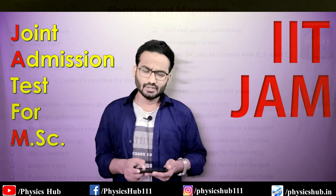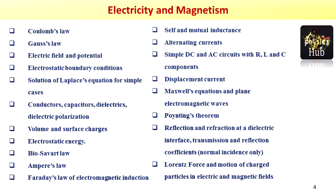The fourth section is Electricity and Magnetism. Topics include: Coulomb's law, Gauss's law, electric field and potential, electrostatic boundary conditions, solutions of Laplace equation for simple cases, conductors, capacitors, dielectrics and dielectric polarization, volume and surface charges, electrostatic energy, Biot-Savart law, Ampere's law, Faraday's law of electromagnetic induction, self and mutual inductance, alternating currents, simple DC and AC circuits with R, L, and C components, displacement current, Maxwell's equations, plane electromagnetic waves, Poynting theorem, reflection and refraction at a dielectric interface — normal incidence only — Lorentz force, and motion of charged particles in electric and magnetic fields.